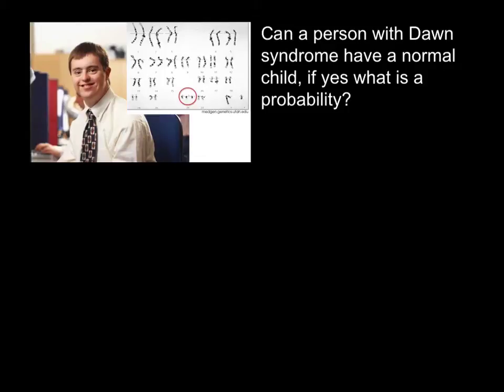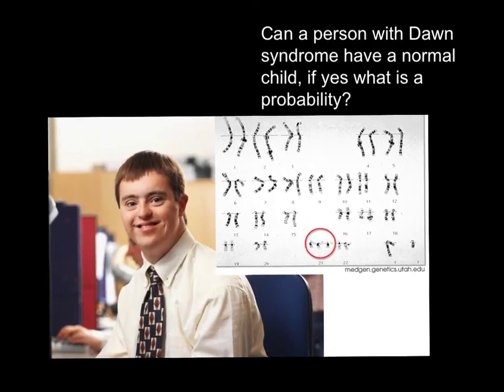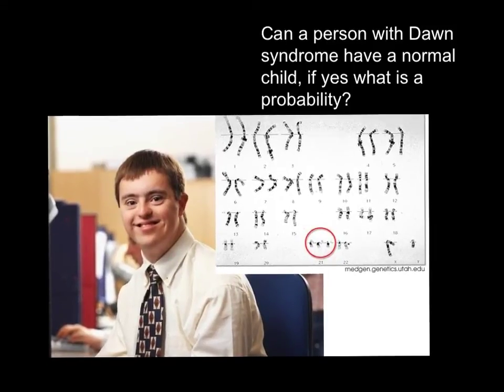Hi, in today's video I want to answer a question: can a person with Down syndrome have a normal child? If yes, what is the probability? And here I want to increase this picture. As you see, there are distinctive features that you can judge that this person has Down syndrome.